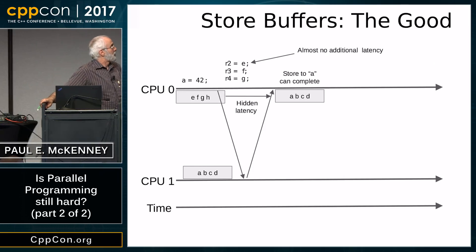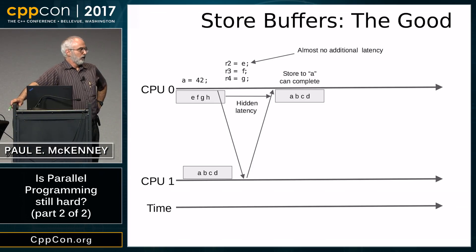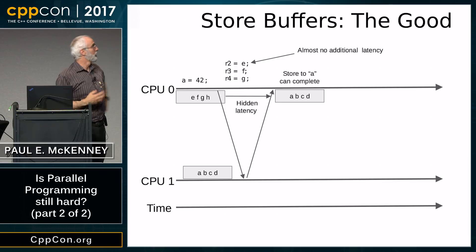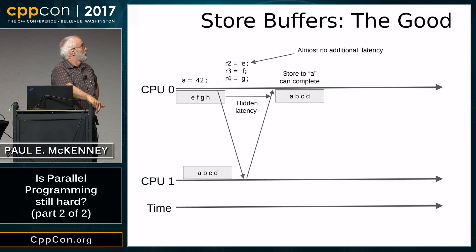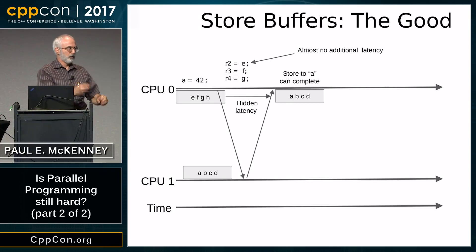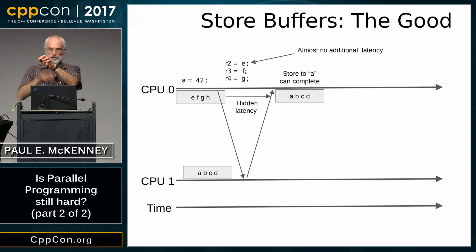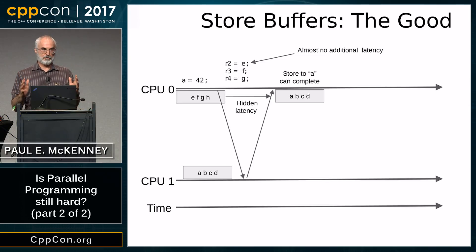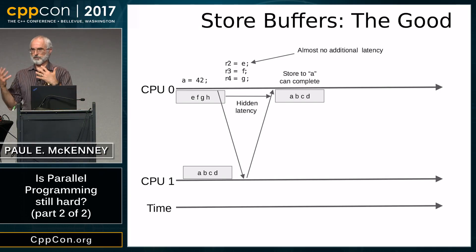Store buffers address another problem. If you did a store without a store buffer, you'd have to wait for the cache line to come to you — a long wait. What a store buffer allows is: record the address and value locally, ask for the cache line, and when it arrives do the store. The CPU can proceed with other operations while the store is pending. Some machines have very large store buffers — many thousands of entries — and on some machines they call it the level zero cache; it's really a giant store buffer.